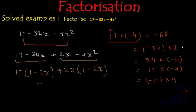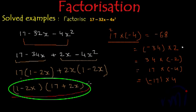And now we have two terms and in both of them we have 1 minus 2x as common factor. So let's take this 1 minus 2x common and then inside the bracket we will have this 17 and this 2x which is positive. So these are the two factors in which 17 minus 32x minus 4x square can be converted.